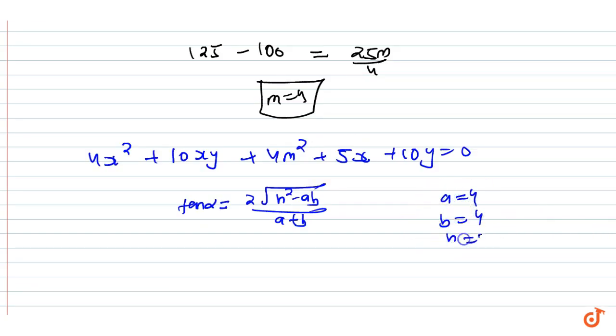Substituting: 2√(h² - ab)/(a + b) = 2√(25 - 16)/(4 + 4) = 2√9/8.